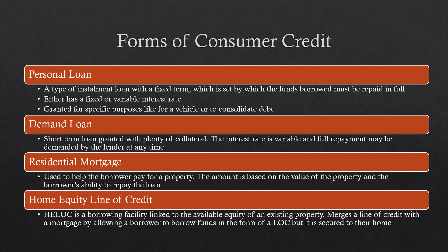There are some other forms of credit. A personal loan is a type of installment loan with a fixed term by which the funds must be repaid in full, with either a fixed or variable interest rate, granted for specific purposes like a vehicle or debt consolidation. A demand loan is a short-term loan granted with collateral where the interest rate is variable and full repayment may be demanded by the lender at any time. You can also get a residential mortgage, which is a traditional mortgage on a home based on the property's value and the borrower's ability to repay.